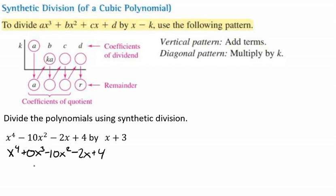So the next thing we're going to do is we need each of the coefficients. Now remember that here we have an imaginary 1, because that's 1x⁴. So we're going to have our 1. Then here we have a 0. And then for our squared we have a -10. And then for our x we have a -2. And then for our constant we have a 4.